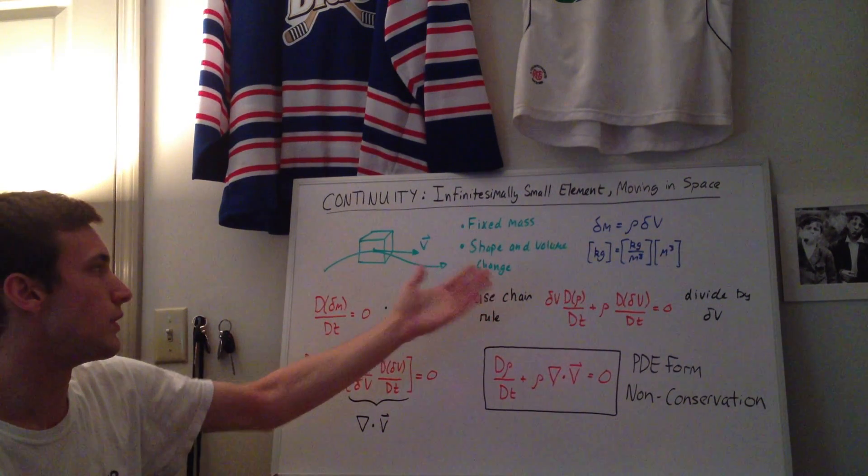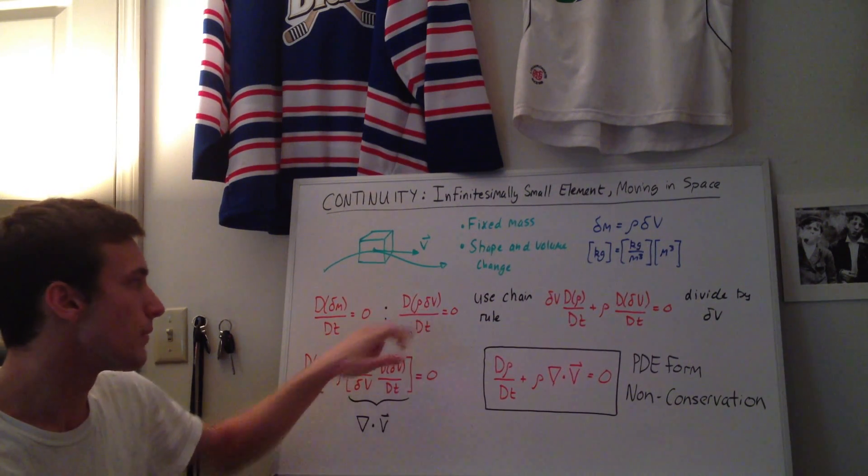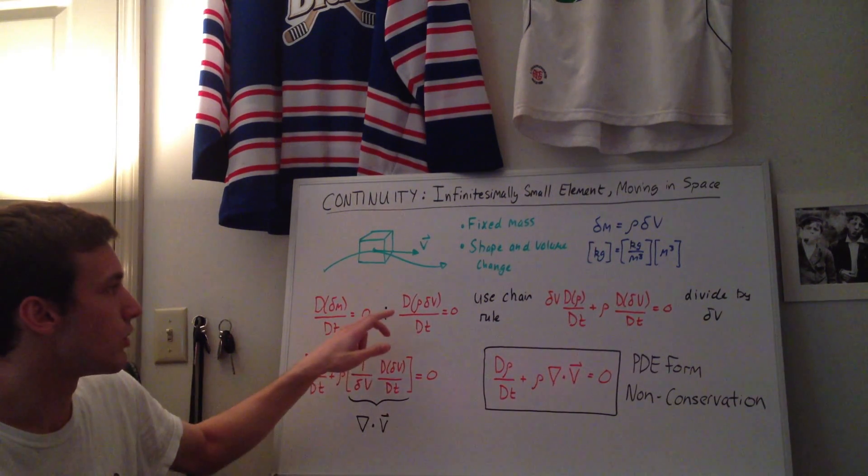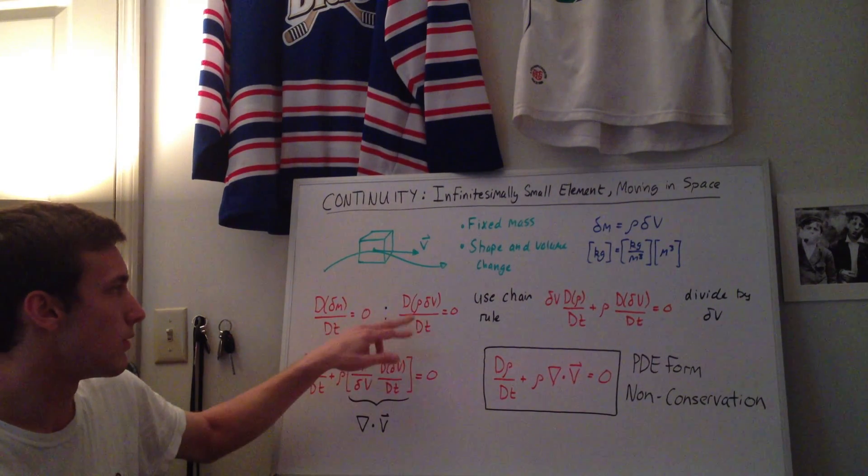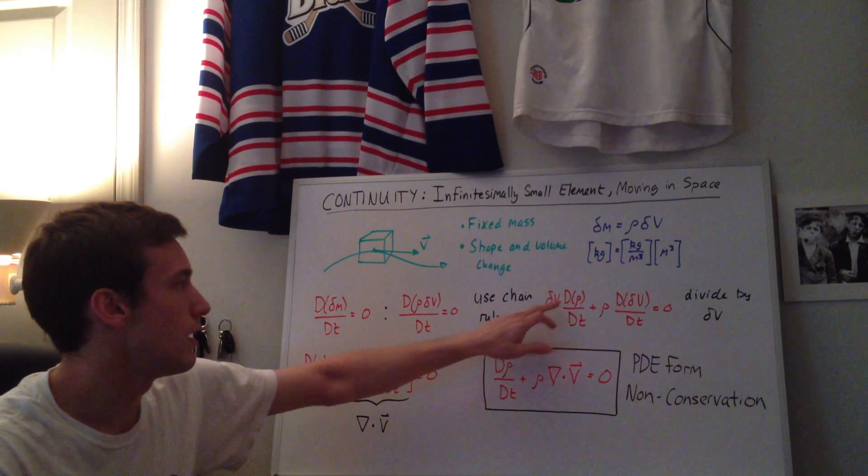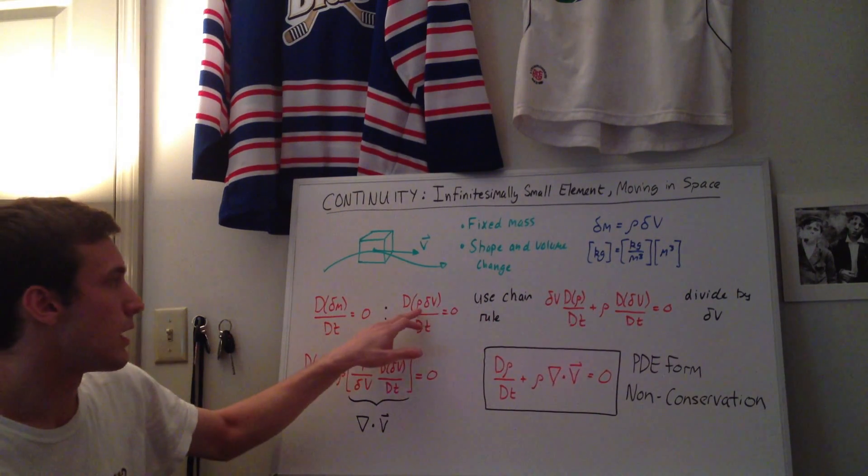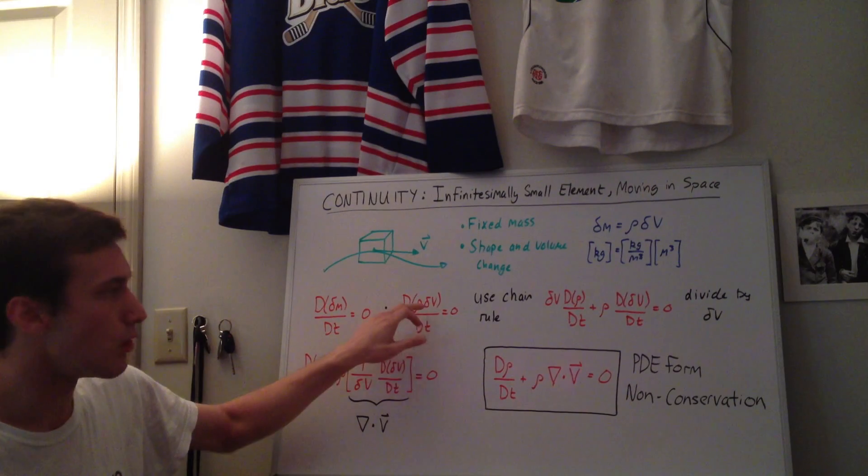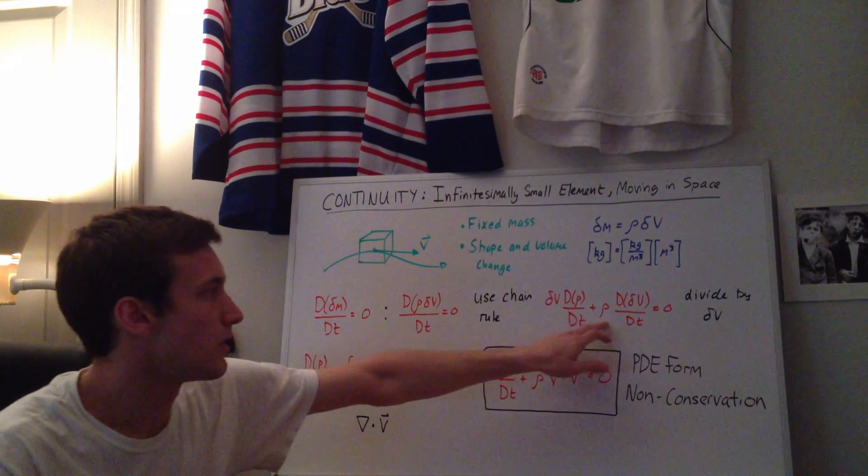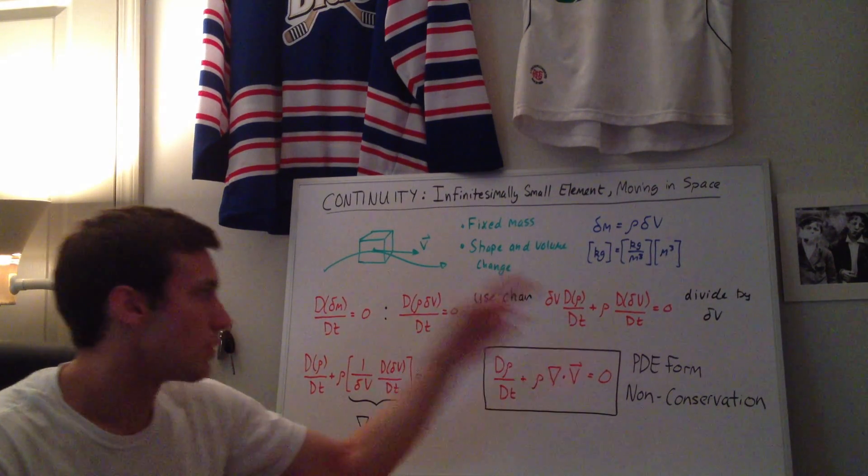So that means that once we plug in the equation for the dm, we get the total derivative of rho dv, and then we want to use the chain rule here. So we take the first one out, and we take only the derivative with respect to rho, so we have dv, and then the total derivative of the density with time, and then we take out the density and take only the derivative of the volume, the change of volume, so we have the density times the total derivative of the change of volume with time. And that's still equal to zero.